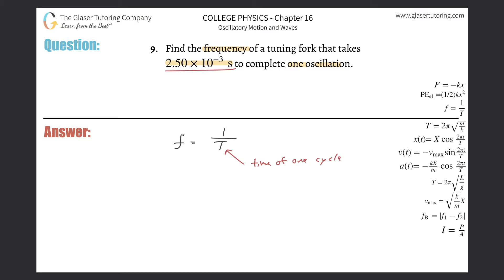So if they told us the time it takes to complete one oscillation, they actually told us the period. And if I know the period, I can simply find the frequency by taking the inverse of it.